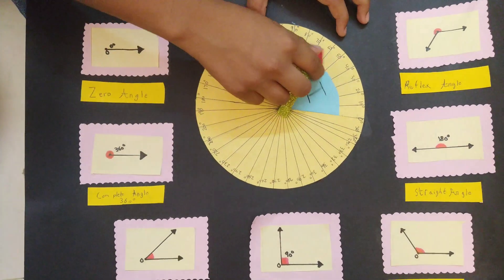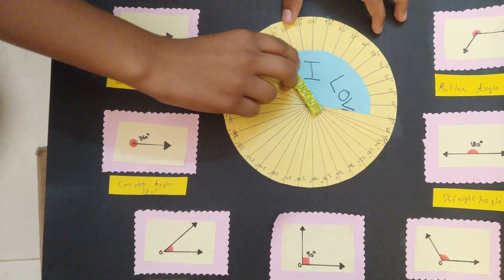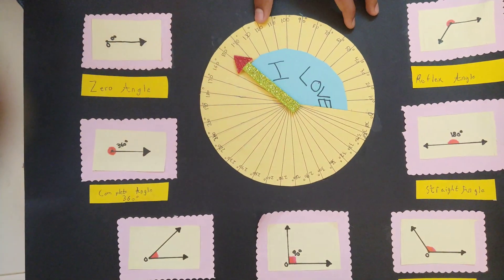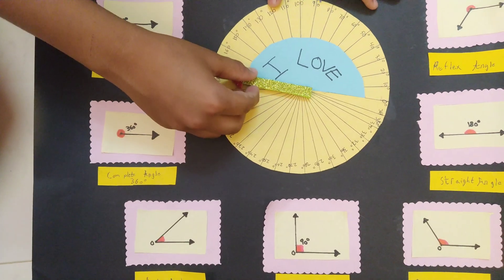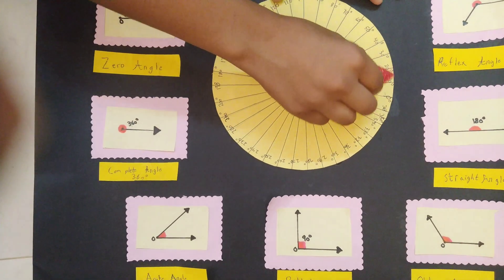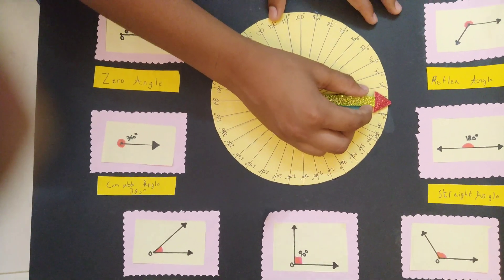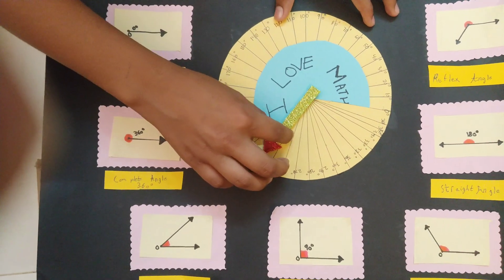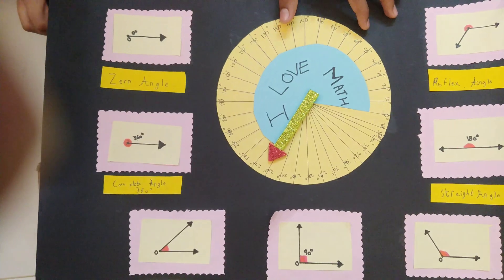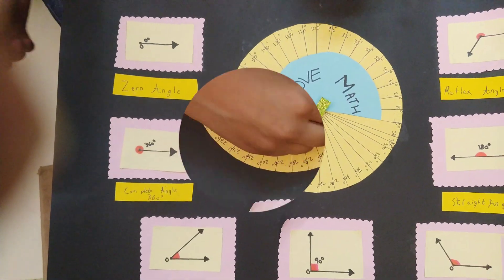Then we have an obtuse angle that is bigger than 90, this is an obtuse angle. Then we have a straight angle that is at 180. And here we have a zero angle that is just zero, zero degrees. And then we have a reflex angle that has to be above 180. So this was the working model of math.